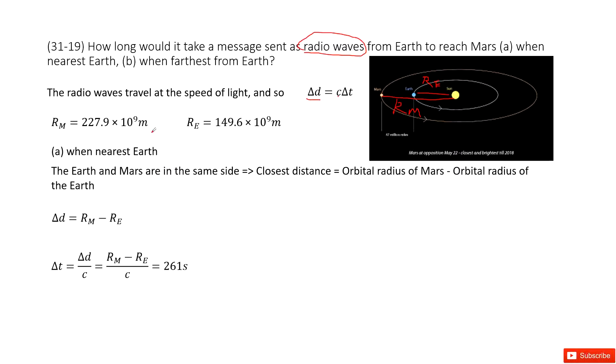Now R_M and R_E are two constants. You can check your textbook or Google. You get these two values. In this case delta d is the distance the radio wave travels, so R_M minus R_E. Now we can write the function as delta t equals delta d divided by c and input delta d inside.